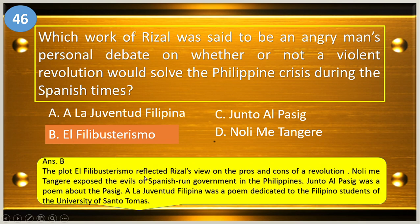The plot of El Filibusterismo reflected Rizal's views on the pros and cons of revolution. Noli Me Tangere exposed the evils of Spanish-run government in the Philippines. Junto al Pasig was a poem about the Pasig River. A la Juventud Filipina was a poem dedicated to the Filipino students of the University of Santo Tomas.